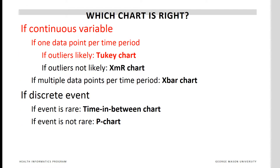If we are dealing with a continuous measure and if we have one data point per time period, then use the 2K chart if there are outliers. Use the XMR chart if there are no concerns for outliers.